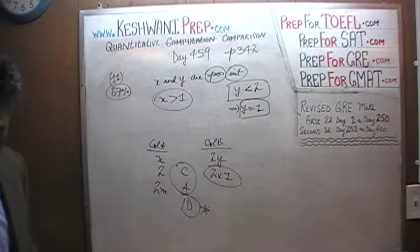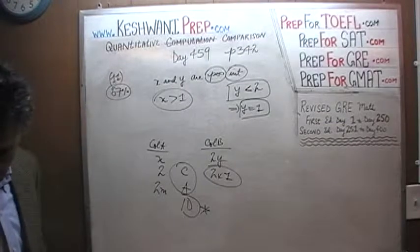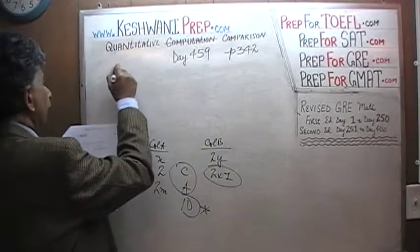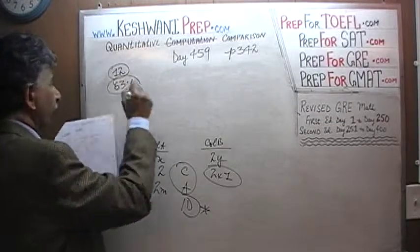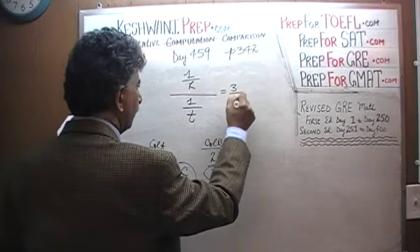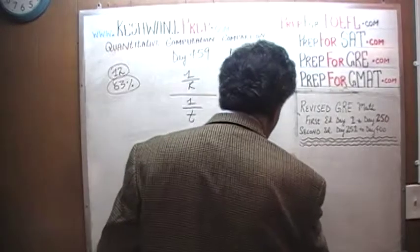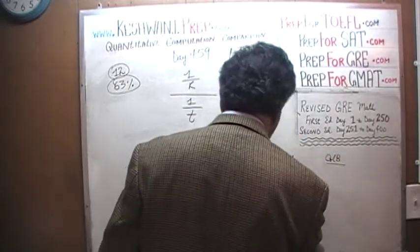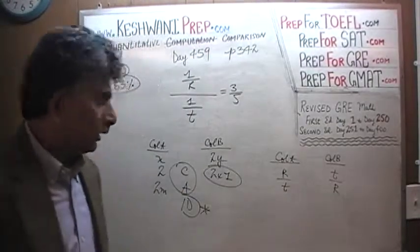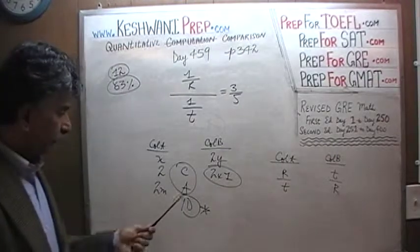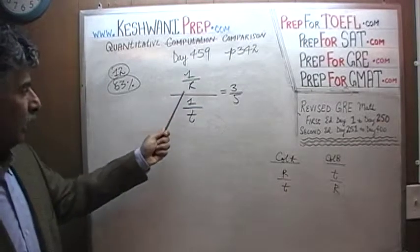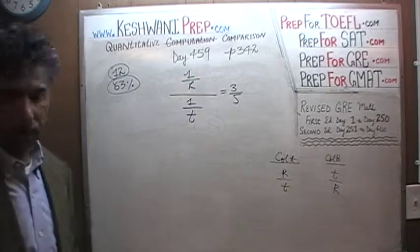Question number 12: 63% of people got it right. We are told that (1/r) divided by (1/t) equals 3/5. We are being asked to compare column A versus column B. Column A is r over t, and column B is t over r. Pause the video and do the problem yourself — I will give you 5 seconds.